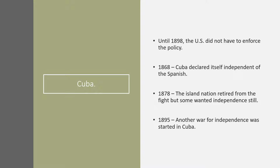In 1868, Cuba declared itself independent of Spain. There was fighting between Spain and Cuba, but in 1878 the island nation was forced to retire from the fight, though they still wanted independence. In 1895, another war for independence was started in Cuba.